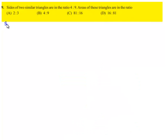Now moving on to solution. He has given the sides ratio of two similar triangles that is 4 is to 9, and he asked us to find the ratio of areas.